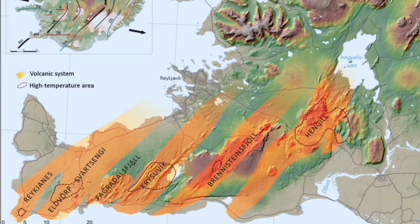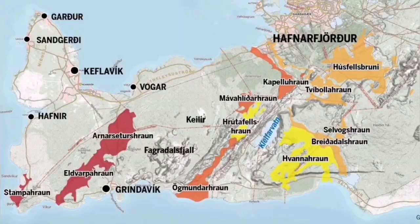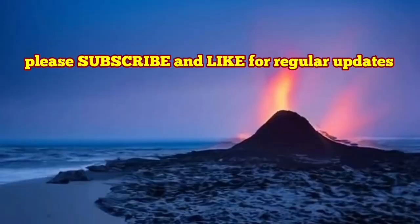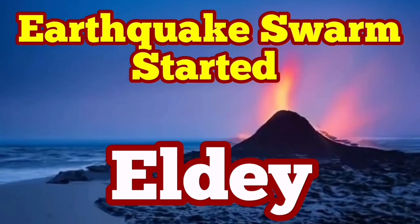Where the earth's crust is stretched more than elsewhere it gets thinner, and through those cracks and the thinning of the crust we have volcanic systems forming. The Reykjanes Peninsula is toward the left side, Fagradalsfjall is almost at the center, and to the right is another volcanic system, and to the left the Svartsengi volcanic system. These are all connected and will be active one after another.